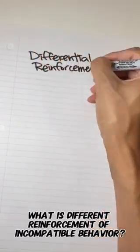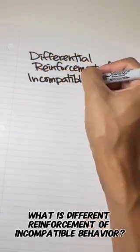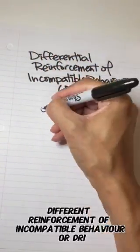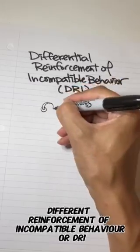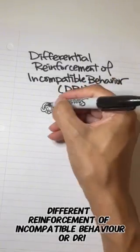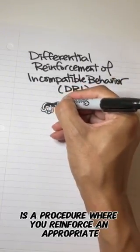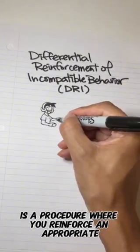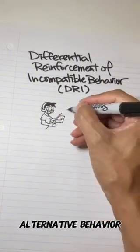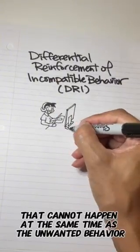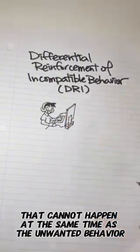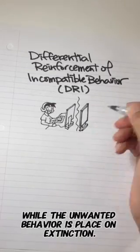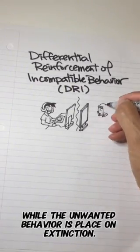What is differential reinforcement of incompatible behavior? Differential reinforcement of incompatible behavior, or DRI, is a procedure where you reinforce an appropriate alternative behavior that cannot happen at the same time as the unwanted behavior, while the unwanted behavior is placed on extinction.